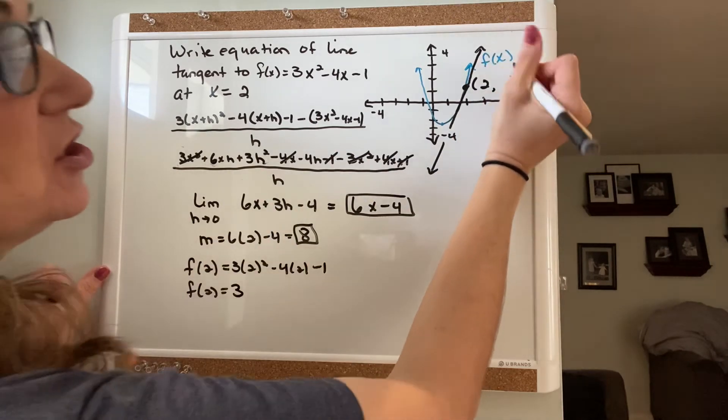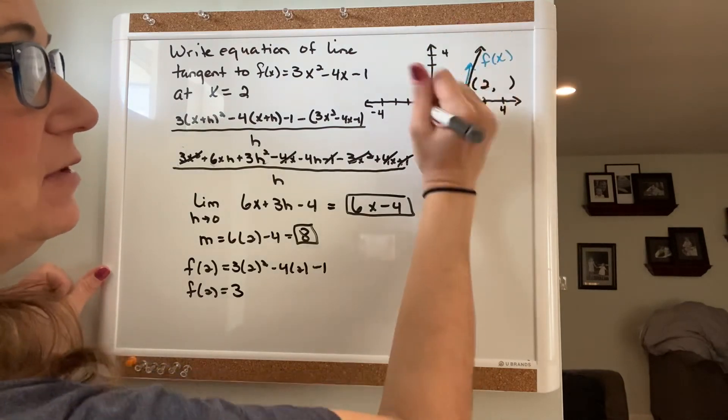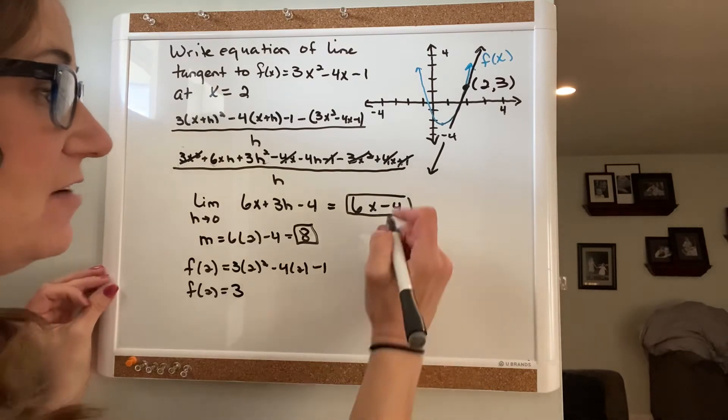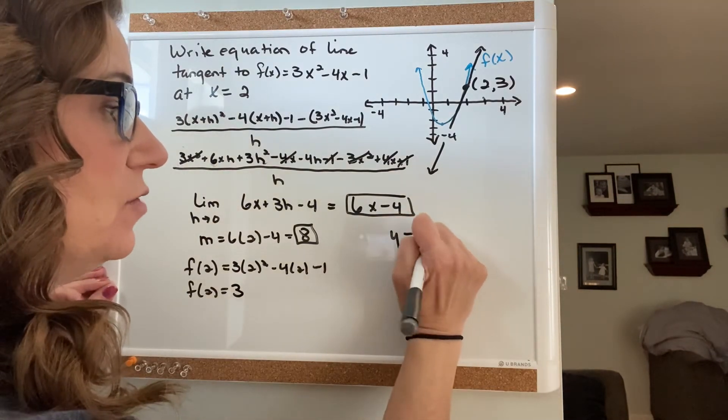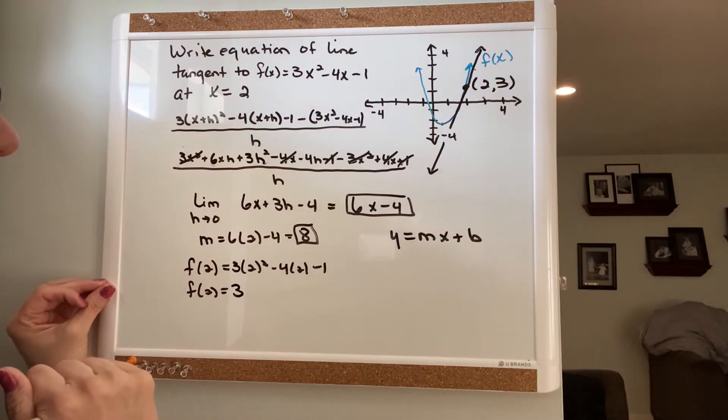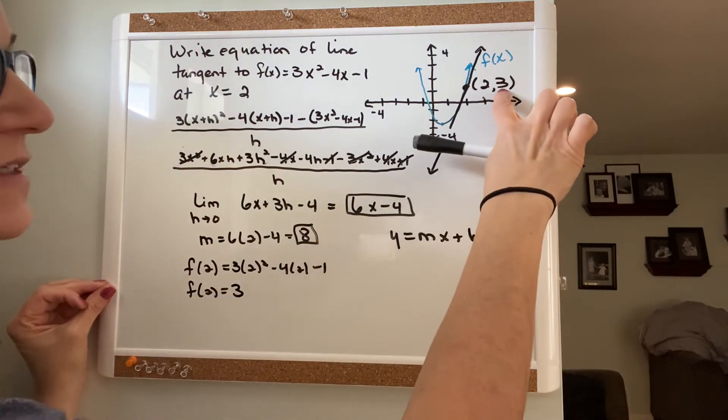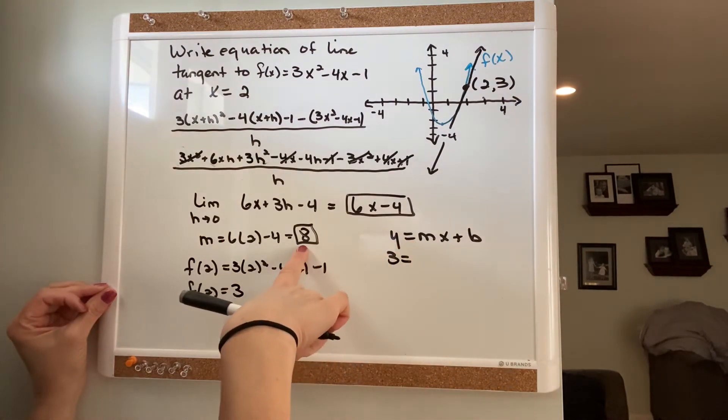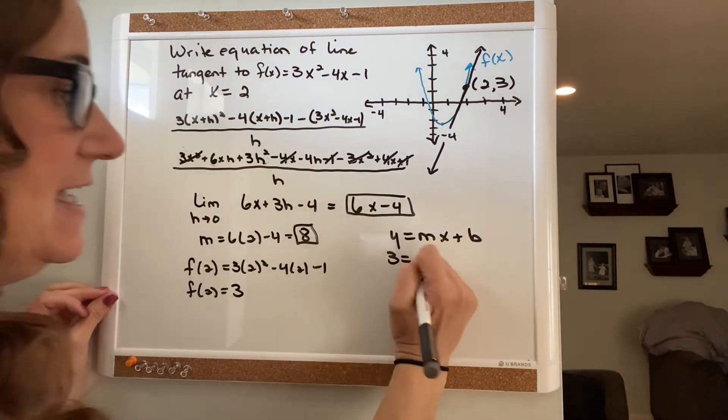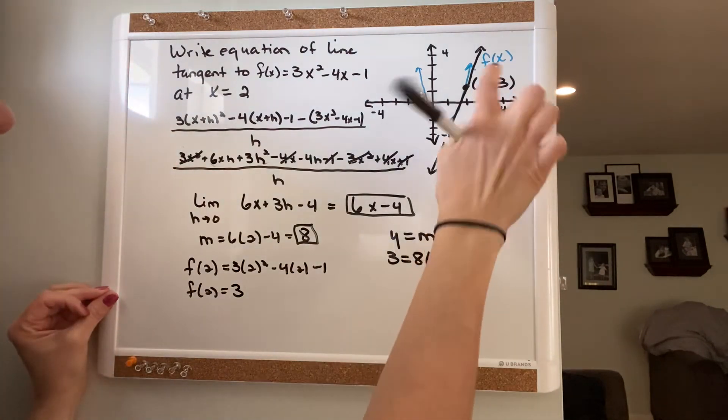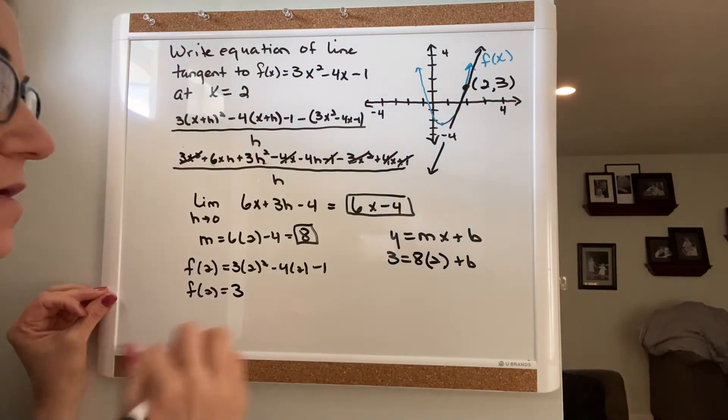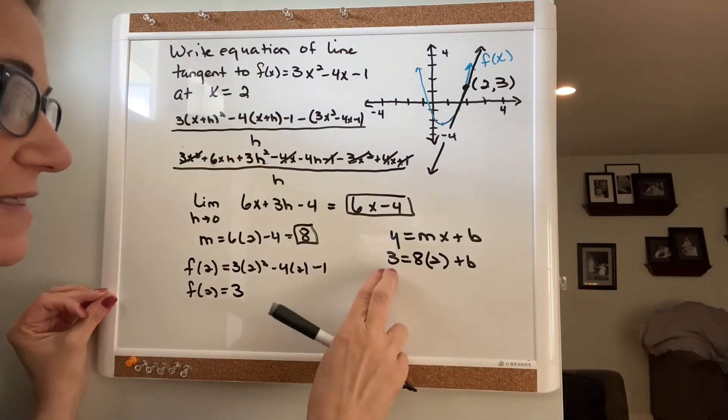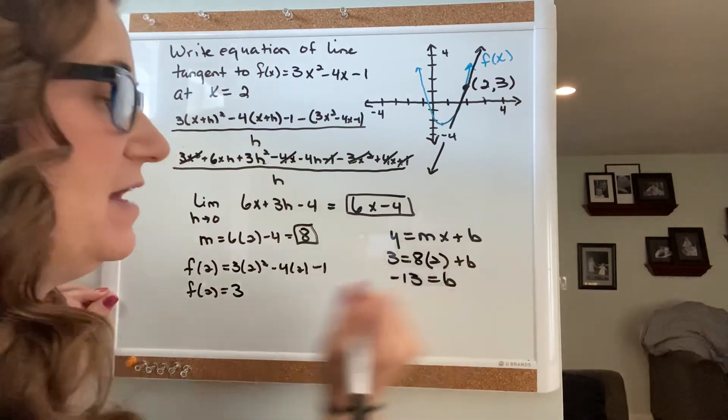So when x is 2 on this parabola, the y value is 3. You now have what you need to find the equation of the line: y = mx + b. So you now know y is 3, so plug in 3 for y. The slope we found by doing the first derivative is 8. x is 2 plus b. So 8 times 2 is 16. If I subtract 16 from 3, I get negative 13 for my b value.